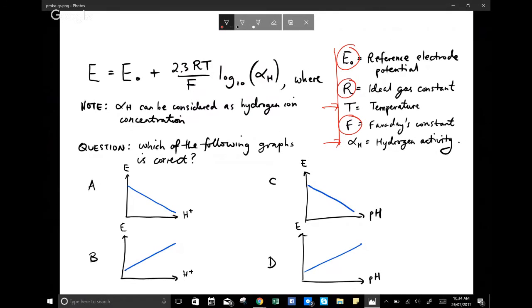And it's a good idea to have a look at these answers, or these options first, to see the kind of things that we might want to look out for. So in A and B, you can see that we're looking at how E changes as H plus increases or decreases. And in C and D, we're looking at how E changes with pH.